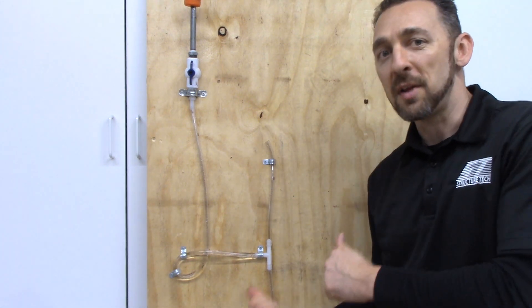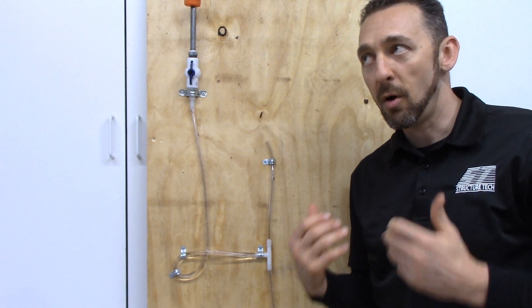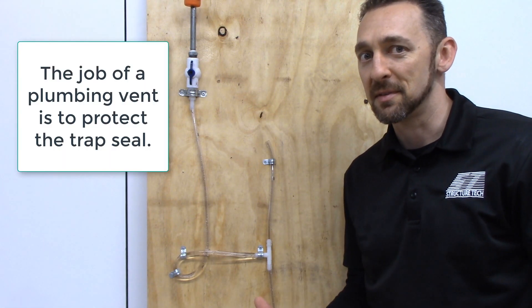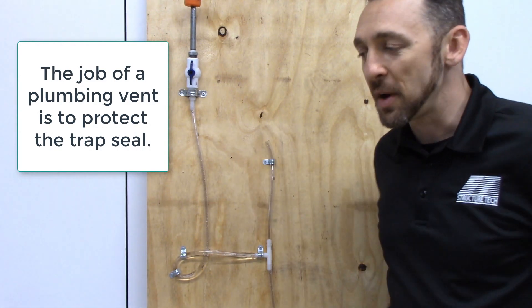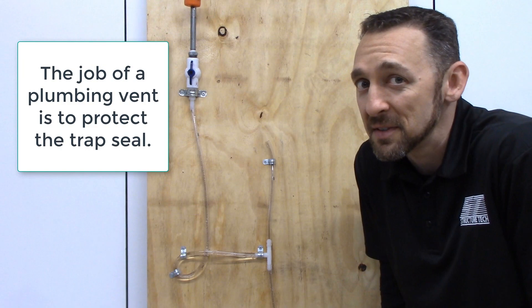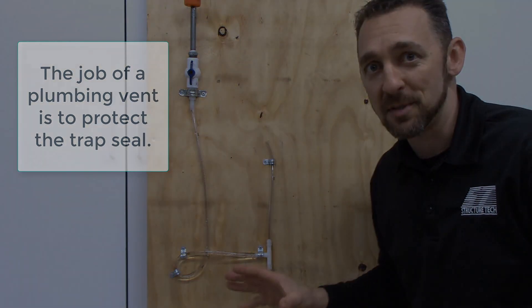So that right there is why homes need plumbing vents. This explains the whole thing. So forget things draining faster because it's a vent. The only reason we have vents is to protect the trap seals.